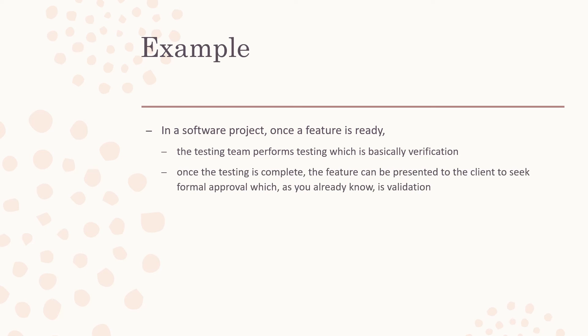Once the testing is complete, the feature can be presented to the client, and you seek their formal approval — that is validation, the Validate Scope process. So here's the difference: when your code is ready and testing is being done, that process is verification. Once testing is complete, you present the code to the client and obtain their approval — that is validation. Verified code and validated code are the two distinct outcomes.